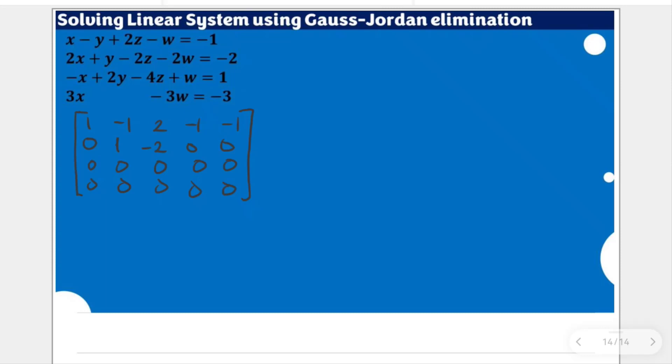We are going to place here the same results from last time. From last time, x in that video was -1 + t. Our y was 2s, z was represented by s, and w was represented by t.